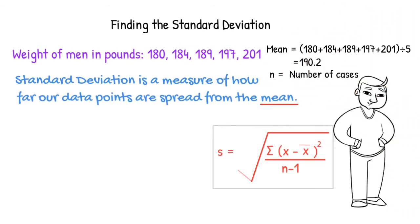We also need the number of cases. Since there are 5 weights, n is equal to 5 in this example. Now we are ready to calculate the standard deviation.